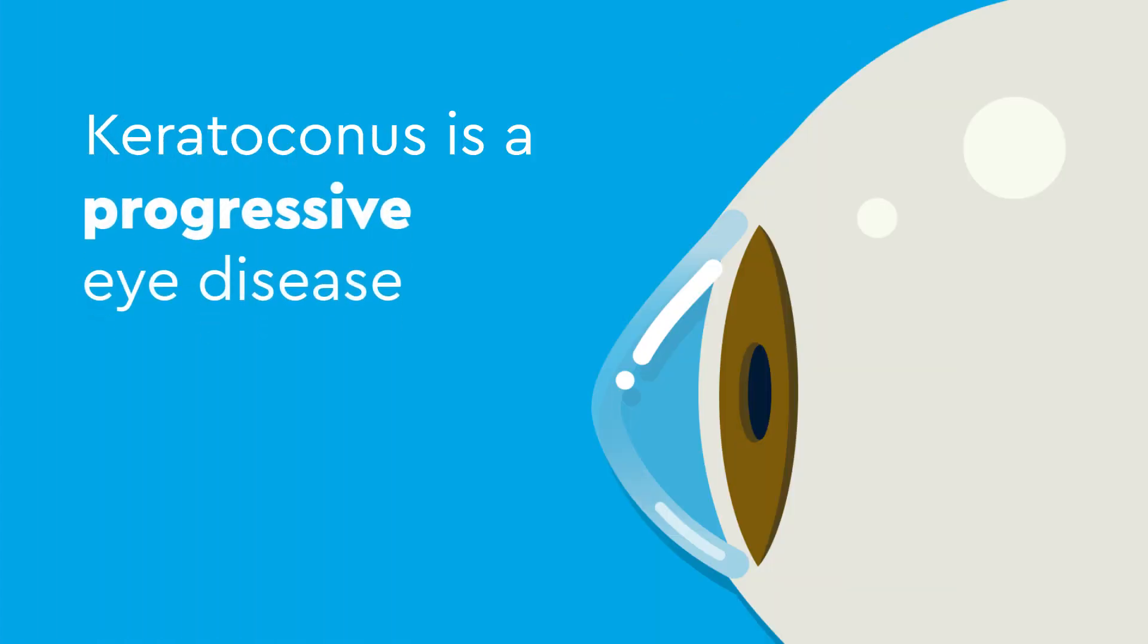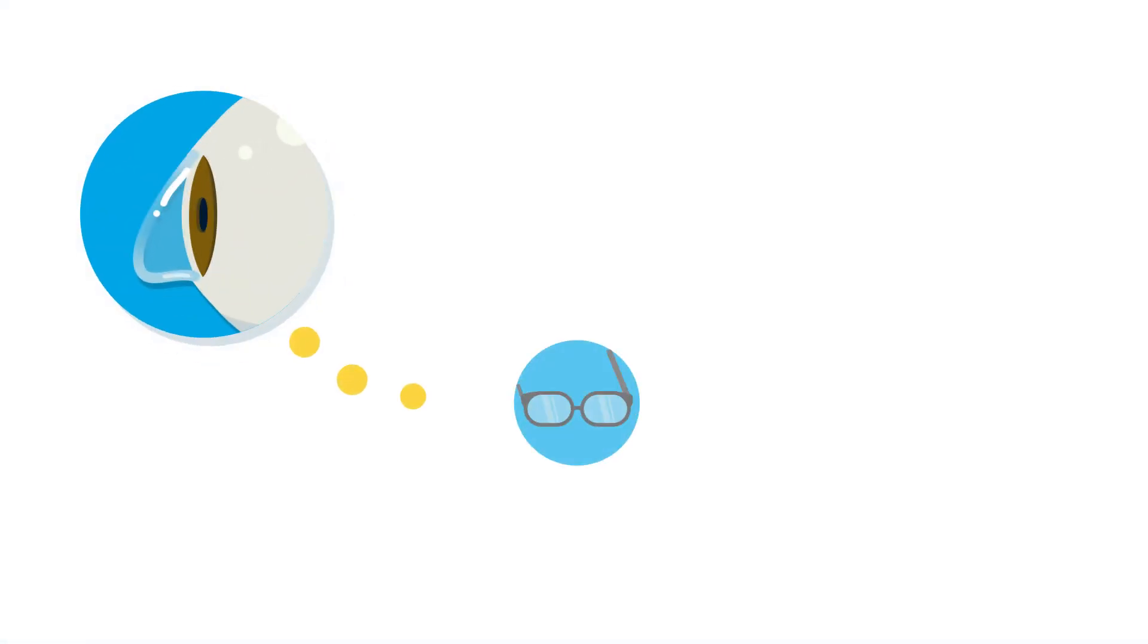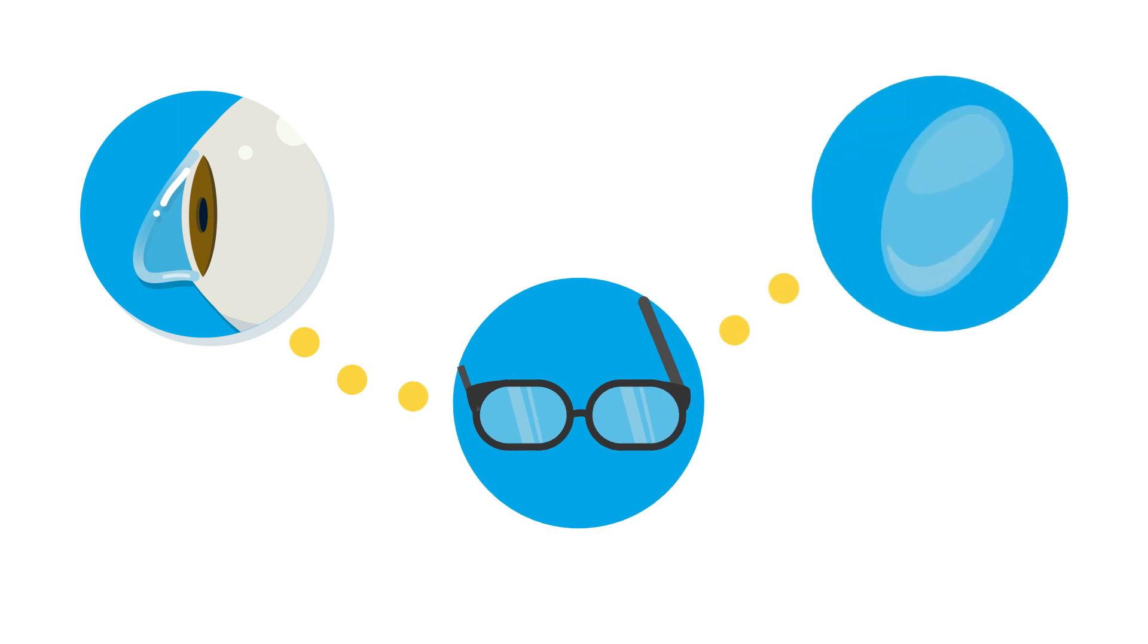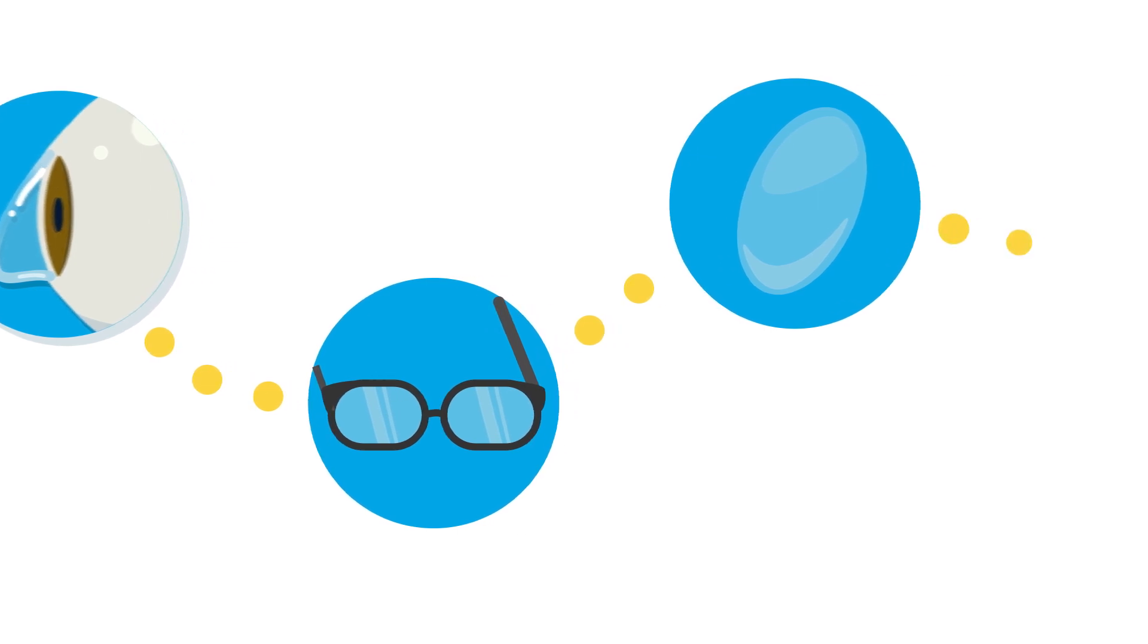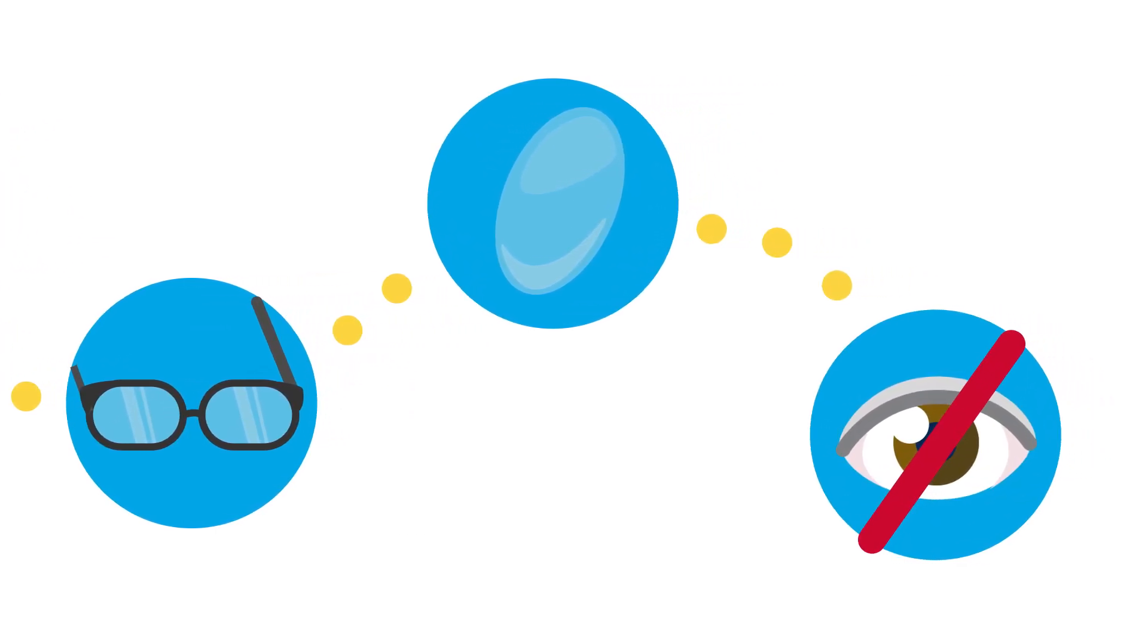Keratoconus is a progressive eye disease, meaning once it starts, it will continue to get worse. Glasses and hard contacts might help blurry vision for now, but neither will stop the cornea from continuing to become more and more cone-shaped, eventually leading to vision loss.